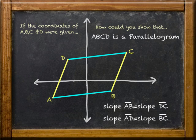And if they are, guess what? We have a quadrilateral with both pairs of opposite sides parallel. Which means that ABCD is a parallelogram. Problem solved! Using slopes.